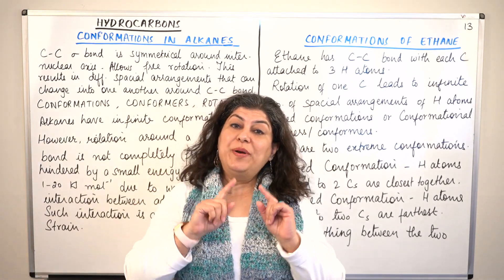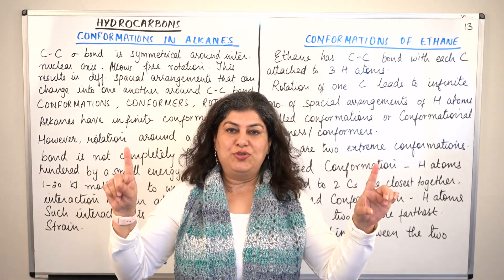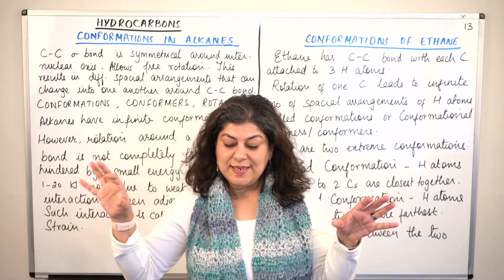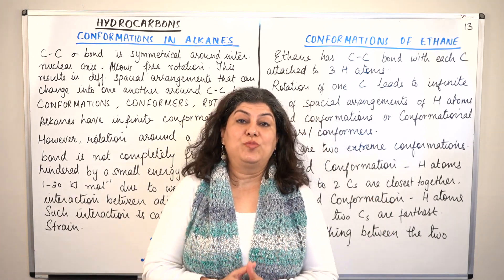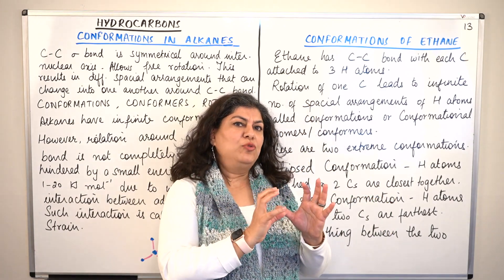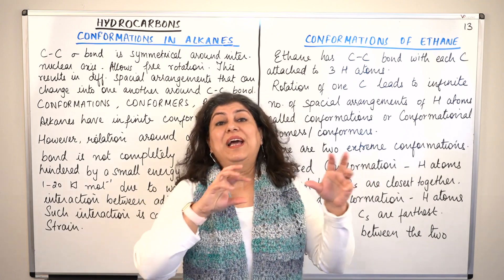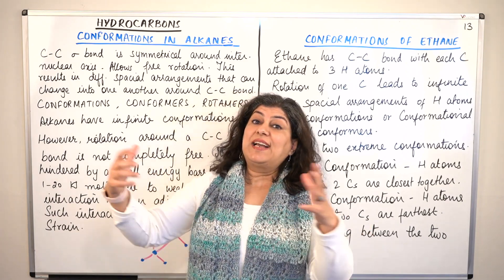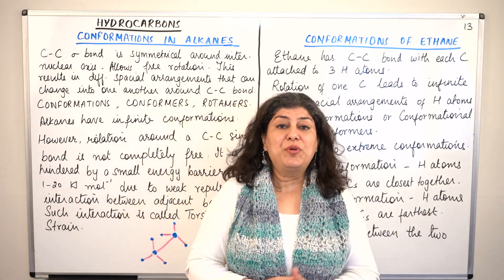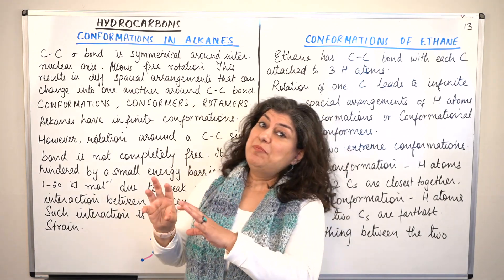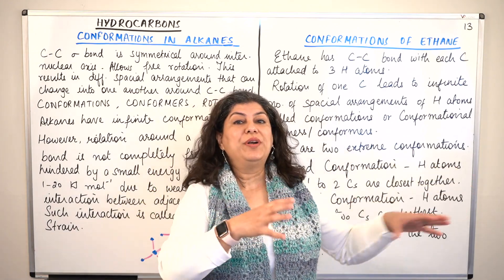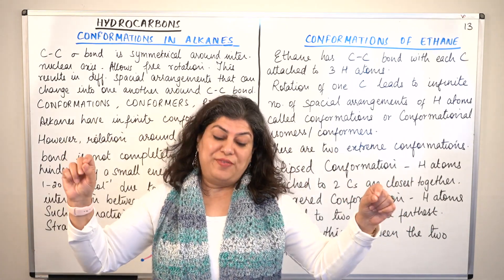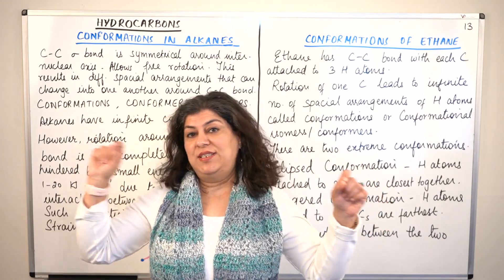Isomerism is classified broadly into two categories: the first is structural isomerism and the second is stereoisomerism. Isomers are compounds which have the same molecular formula but different structural formulae — their structures are different, due to which they act as different compounds. They have different properties; although they have the same molecular formula, the difference in their bonding and structures gives them different properties. So they are broadly classified into structural isomers and stereoisomers.